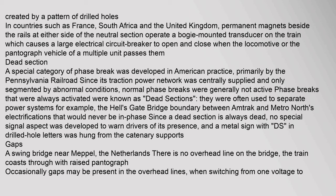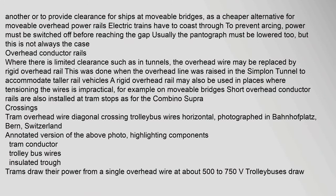Occasionally gaps may be present in the overhead lines when switching from one voltage to another, or to provide clearance for ships at movable bridges as a cheaper alternative to moveable overhead power rails. Electric trains have to coast through to prevent arcing — power must be switched off before reaching the gap, and usually the pantograph must be lowered too, though this is not always the case.